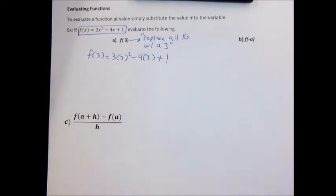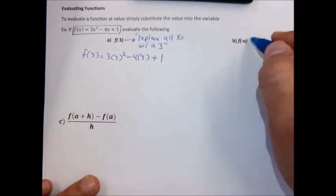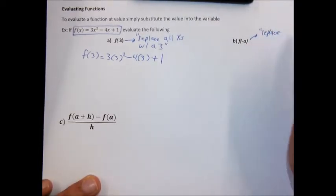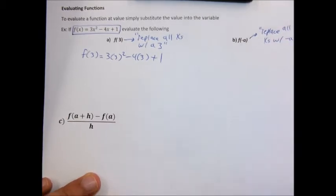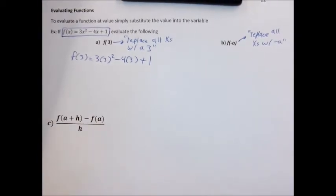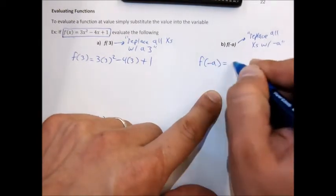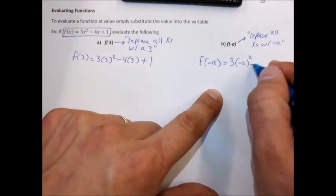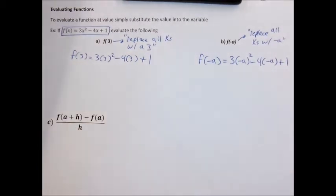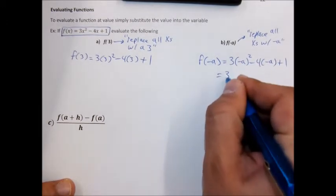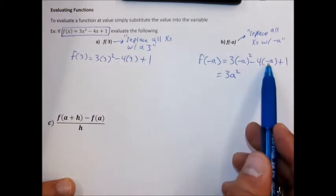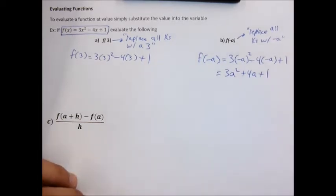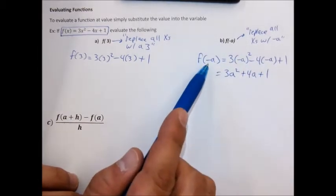We can do that with not just numbers — like f of minus a. F of minus a has the same instructions: replace all the x's with minus a. So f of minus a is just 3 times minus a squared, minus 4 times minus a, plus 1. If we square minus a, it becomes positive a squared. Multiplying minus 4 and minus a gives positive 4a. And that's all we can do — we've plugged in minus a.